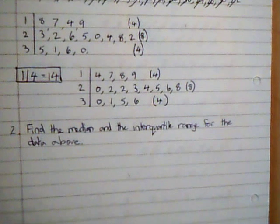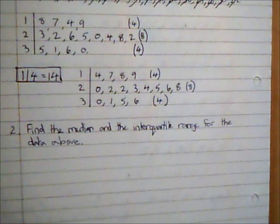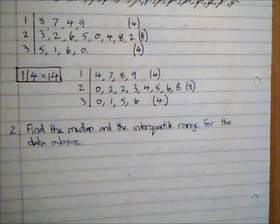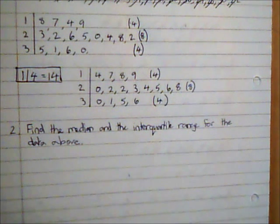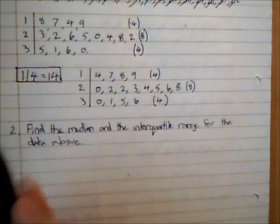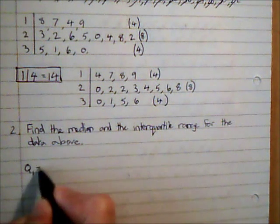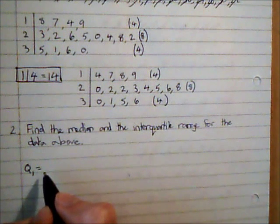So how can I use this to, for instance here, find the median and the interquartile range for this data? So I'm going to use my ordered stem and leaf diagram to do it. And I need all three quartiles so I'm going to work those out first. So Q1 is going to be needed in my calculations of the interquartile range.